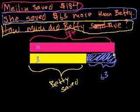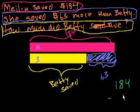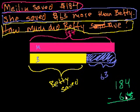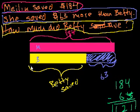So what is $184 minus $63? In the ones place, 4 is greater than 3. In the tens place, 8 is greater than 6. In the hundreds place, 1 minus nothing is 1. So: 4 minus 3 is 1, 80 minus 60 is 20, and 100 minus nothing is 100. The answer is $121. Betty saved $121. And you can verify: $184, which is what Mei Lin saved, is indeed $63 more than $121.